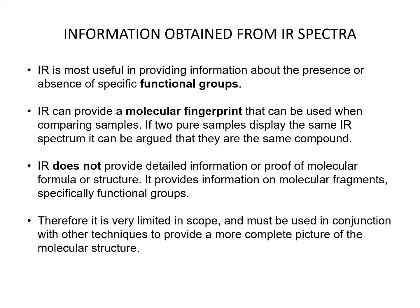IR is most useful in providing information about the presence or absence of specific functional groups. IR can provide a molecular fingerprint that can be used when comparing samples. If two pure samples display the same IR spectrum, it can be argued that they are the same compound. However, IR does not provide detailed information or proof of molecular formula or structure — it provides information on molecular fragments, specifically functional groups. Therefore, it is very limited in scope and must be used in conjunction with other techniques to provide a more complete picture of molecular structure.